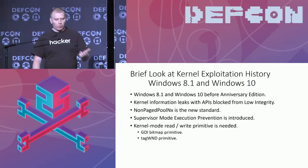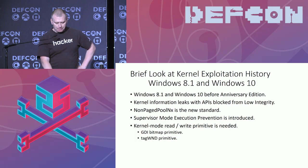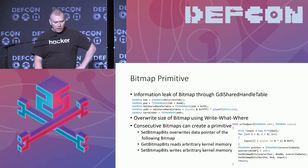What we need is a read-write primitive, just like we know from browser exploits but in the kernel. Some of the most known ones are the bitmap primitive and the window primitive. The idea for the bitmap primitive is that you can get the address of a bitmap through a table called the GDI shared handle table. Once you have the location of a bitmap, you can use the ability to overwrite the size of it. Make sure you have two bitmaps after each other, then use the first one to overwrite the second one, overwrite the pointer to the data area, and use the second one to read or write in memory.